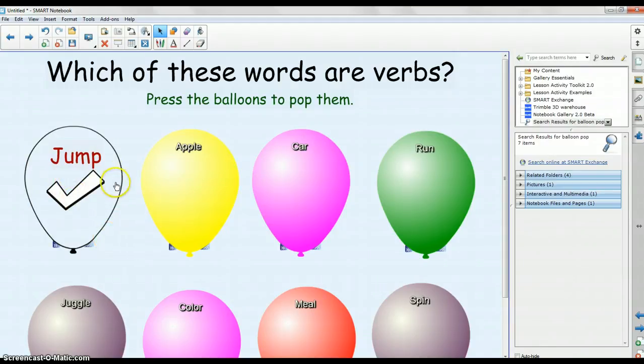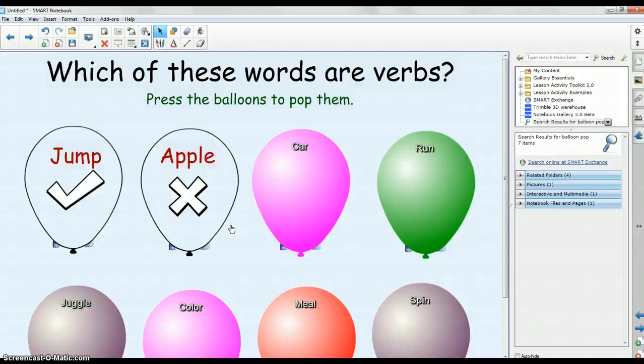So jump is a verb so it got a check. Let's go ahead and try Apple. Okay, so students popped the incorrect balloon and they could tell that they were not correct. Like I said, we are going to be creating a lesson using these balloons that can be used in the elementary mathematics classroom.